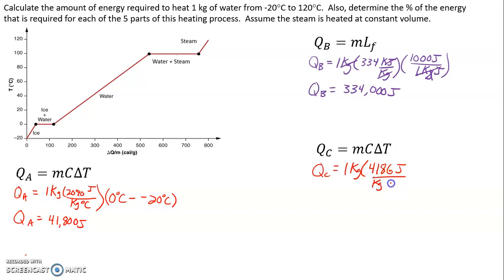Again, that's joules per kilogram degree C. The temperature change is from 0 to 100, so 100 minus 0. Qc is 418,600 joules for this part right here.